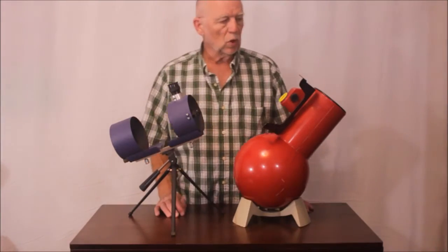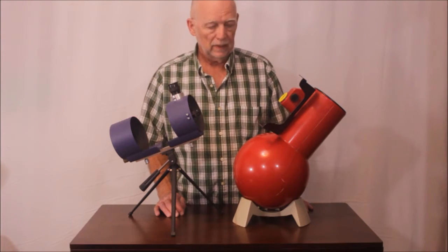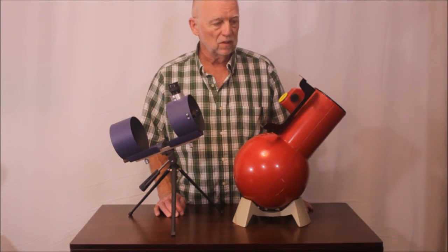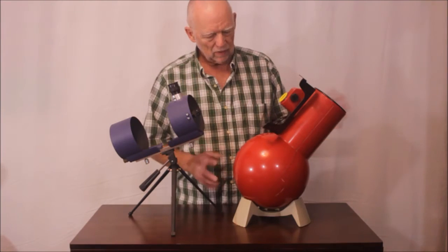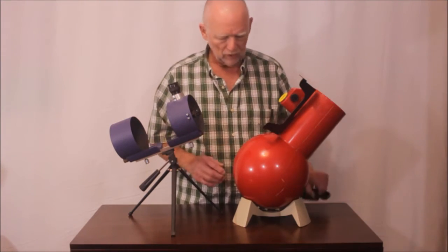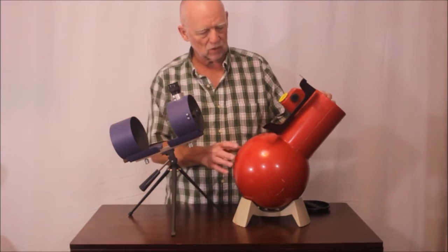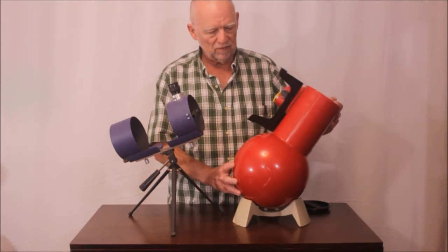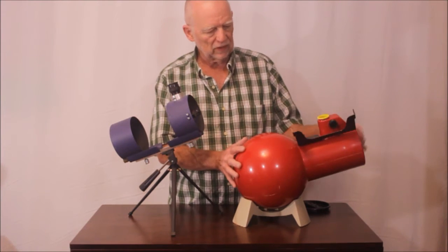Okay, believe it or not, these two scopes are identical. And I mean that strictly in the sense of the optics. They're four inch, a little bit more, four and a quarter inch, very fast telescopes. This is the very famous and very friendly Astroscan.